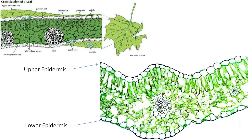If you take a cross section of the leaf, you get two surfaces. These two surfaces are covered by the epidermis — the upper epidermis and the lower epidermis.